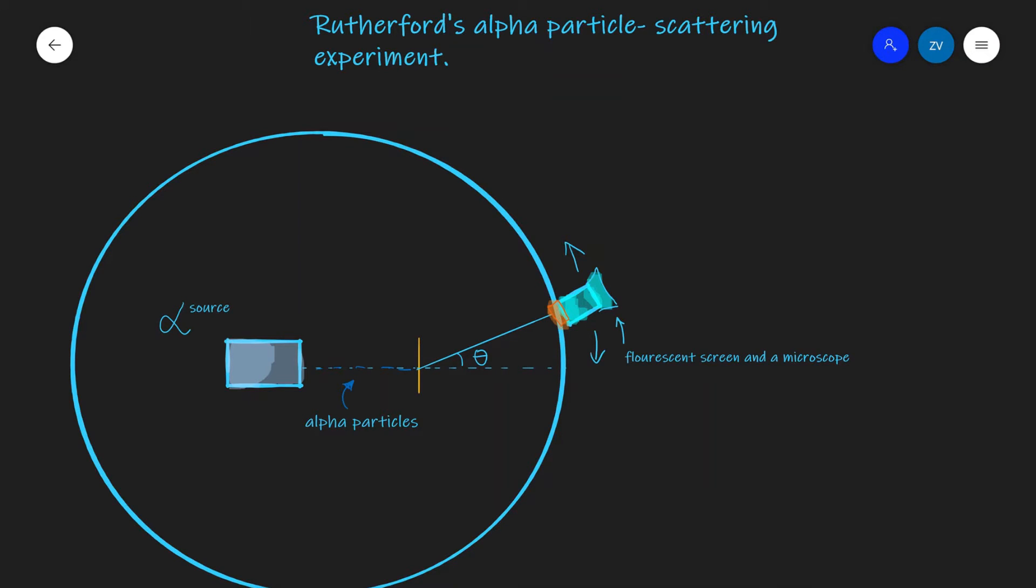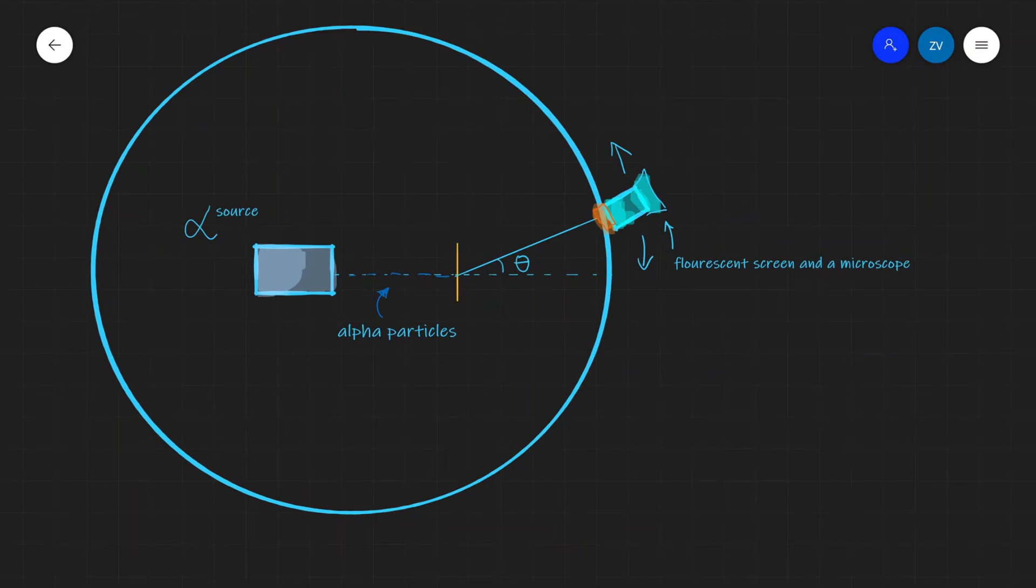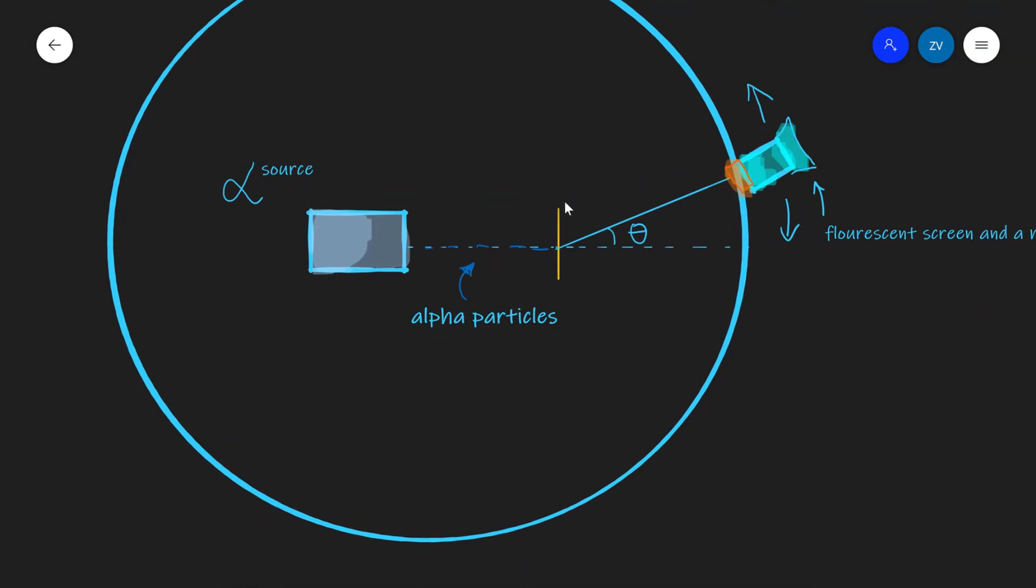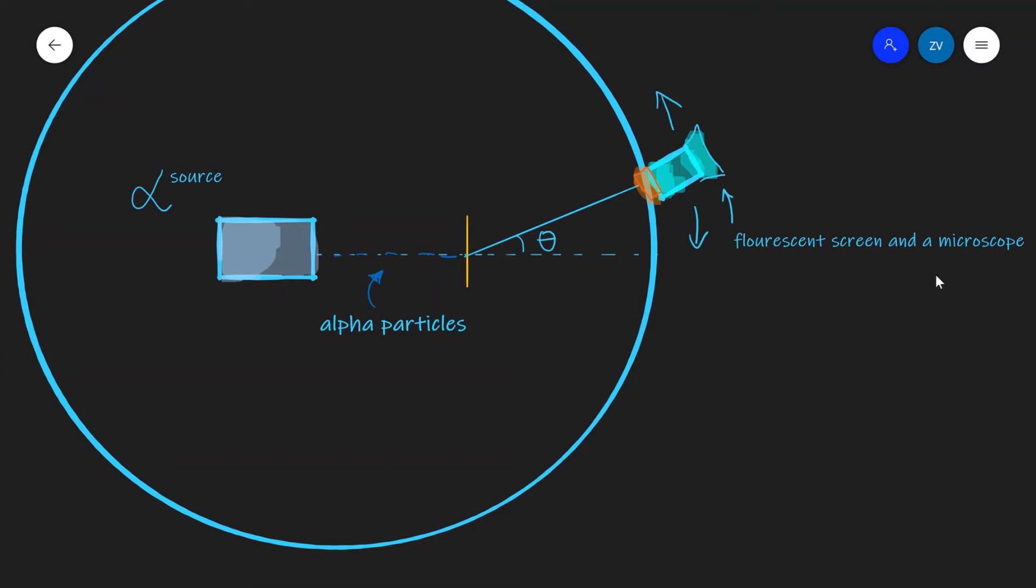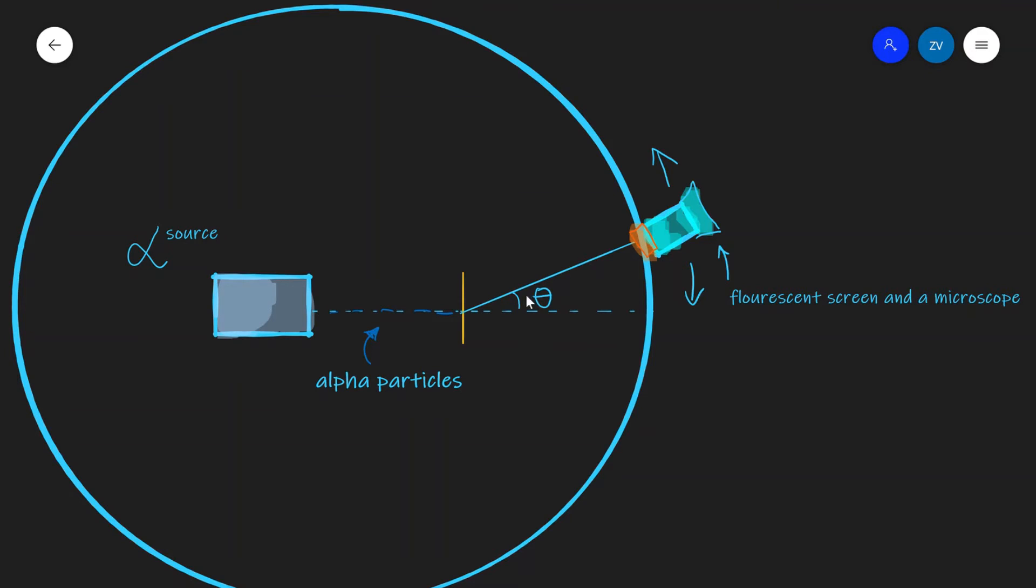So Rutherford decided to test the plum pudding model of the atom. By doing so, he chose to fire off alpha particles at a thin sheet of gold foil. What he had on the other side was a fluorescent screen which was actually attached to a microscope and he was able to detect how many particles were arriving at a given angle away from the gold foil. This was his setup. Essentially he would fire off particles by using an alpha particle radiation source straight at the gold foil.